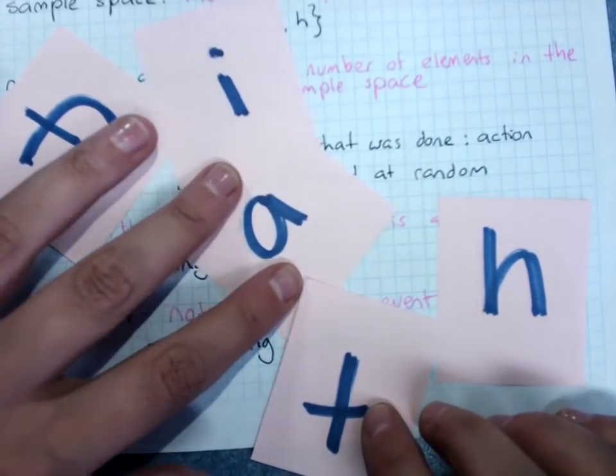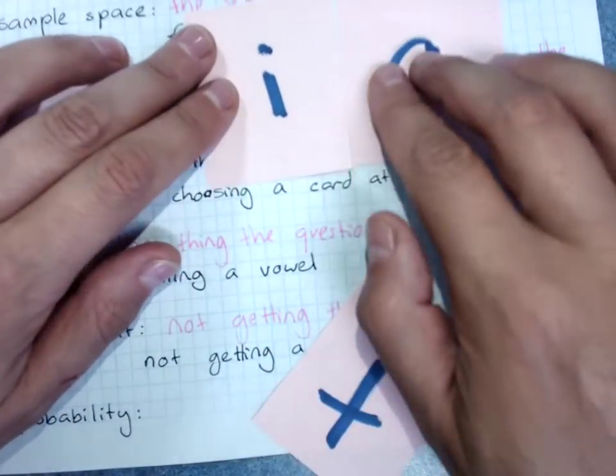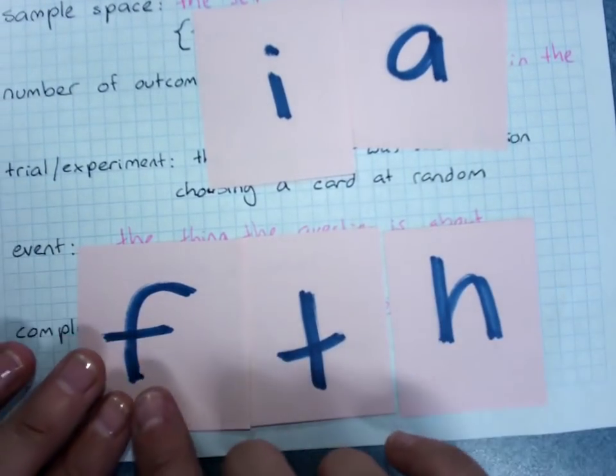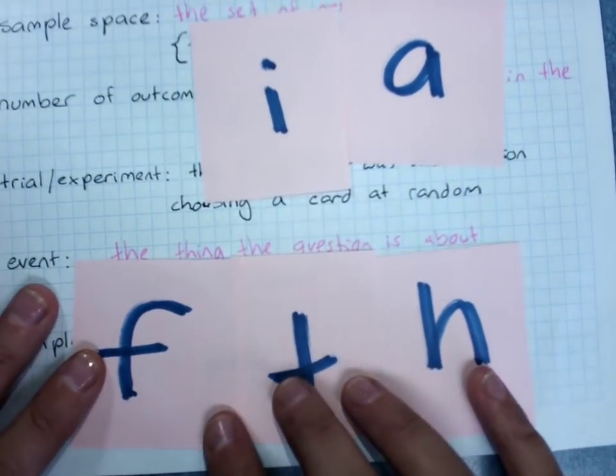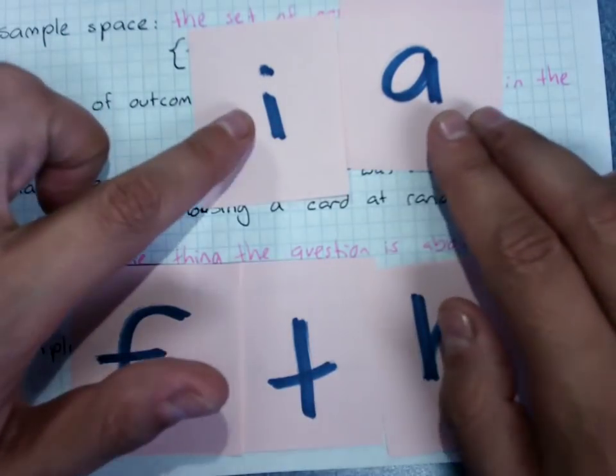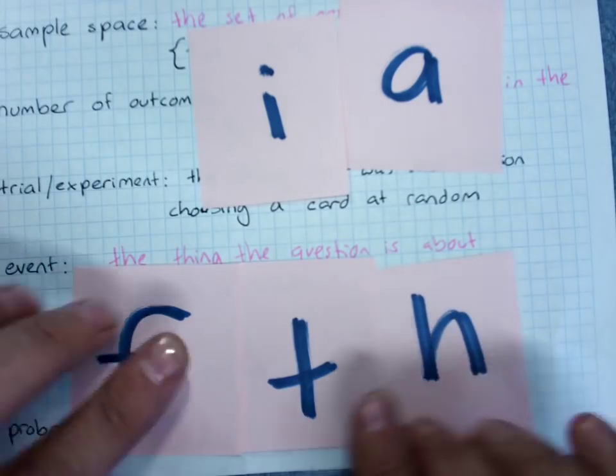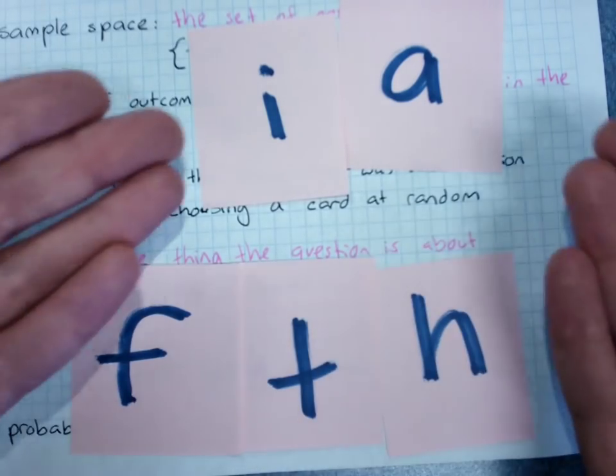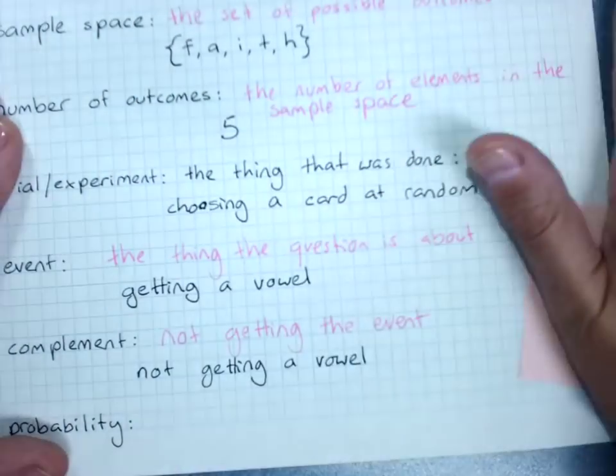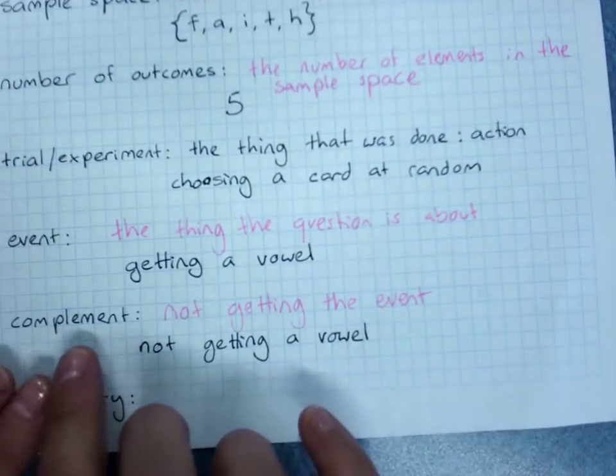So when you look at the letters of faith, the vowels are I and A, and everything else is not a vowel - F, T, H. And so that's the total of the possibilities. The event and its complement covers everything that could happen - it's either a vowel or not a vowel.